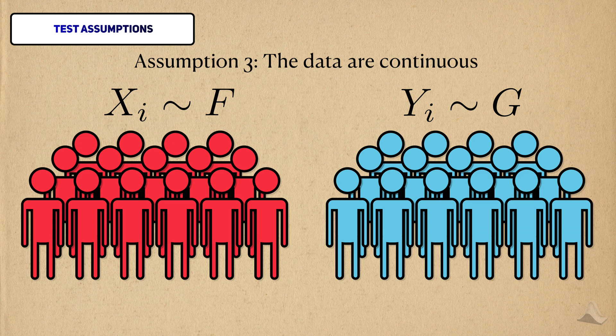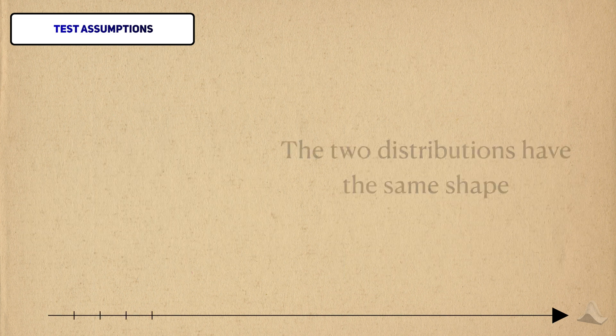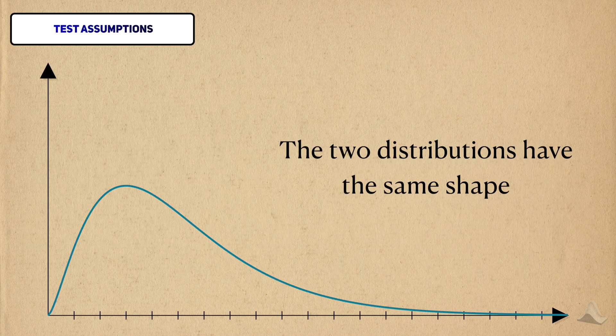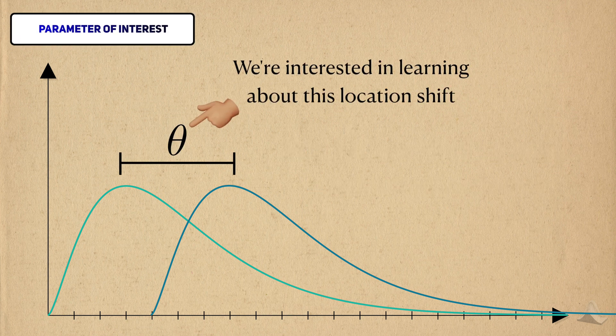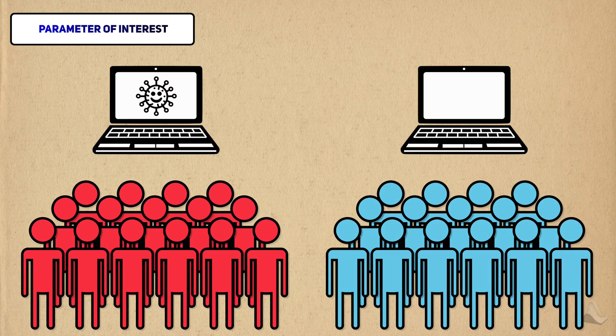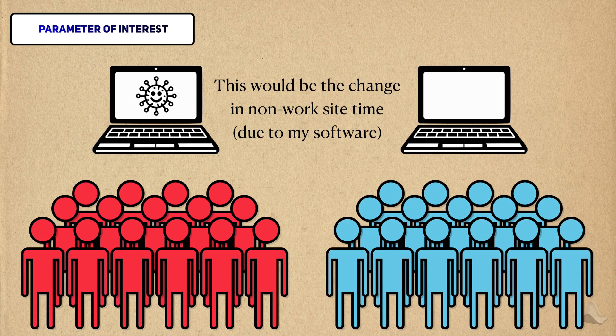But we do need to impose one slight restriction on one of the CDFs. We need to assume that the distributions are the same, but just that one of them is shifted by some value theta. As you might expect, the parameter I'm interested in learning more about is this location shift theta. In our example, this would be the change in time spent on non-work websites.